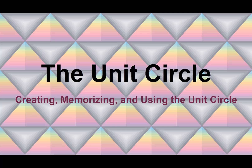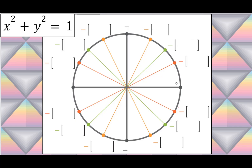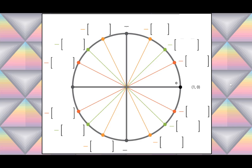This video covers the unit circle: creating, memorizing, and using it. The equation for the unit circle is x squared plus y squared equals 1. The radius of the unit circle is 1 unit. Knowing that the radius is 1 can help us fill in the points on the axes. For the positive x-axis the point is (1, 0), for the positive y-axis it is (0, 1), for the negative x-axis it is (-1, 0), and the circle intersects the negative y-axis at (0, -1).